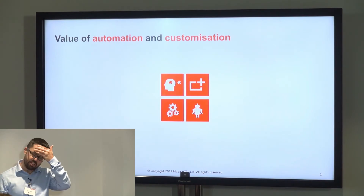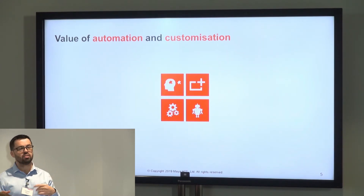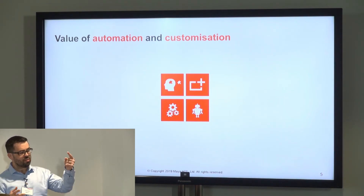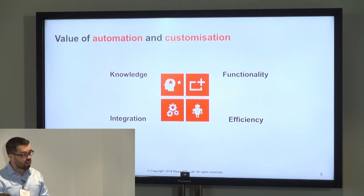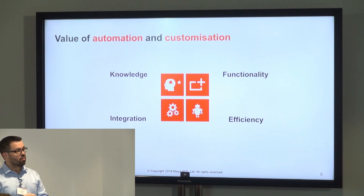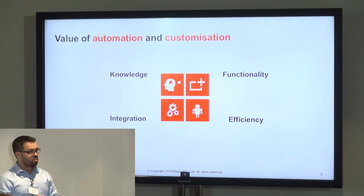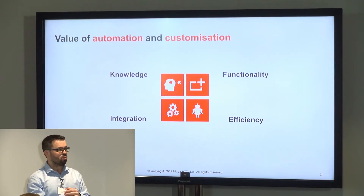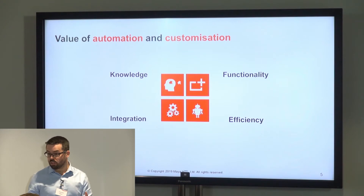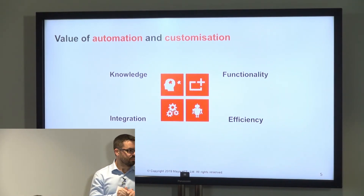So, automation and customization. We see value in four major areas, and for any project we'll usually see benefits in more than one. The four are: knowledge — capturing the knowledge in the company; functionality — extending what's already available in the commercial product; integration — integrating your workflow and in-house or third-party tools not currently integrated into SimCenter; and efficiency through automation.